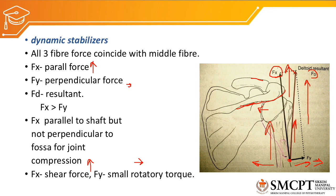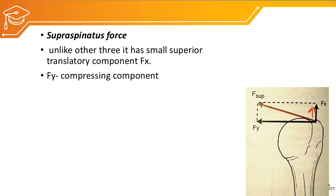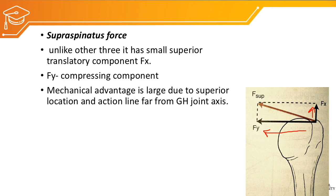As we have understood, the deltoid alone is not able to create abduction movement because of the greater translatory force rather than rotatory force. So the glenohumeral joint needs the function of supraspinatus. The supraspinatus force, unlike the other three rotator cuff muscles — infraspinatus, teres minor, and subscapularis — has a small superior translatory component Fx, whereas deltoid had a large Fx. But supraspinatus has a large compressive or rotatory force Fy, which pulls the humerus towards the glenoid fossa, with a large mechanical advantage.